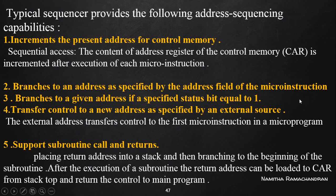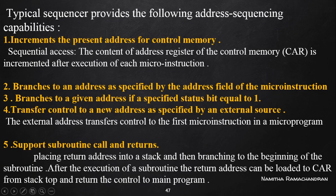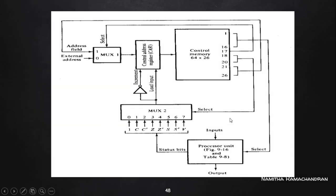The second situation is branching — we need to branch to some other distant location of our currently executing program. Sometimes we need to branch by avoiding sequential instruction execution, like in an if-else case. In that case, we need to load our control address register with a distant branch target address, avoiding the sequentially next address from the control memory.